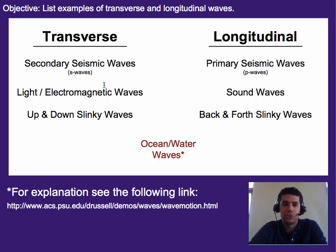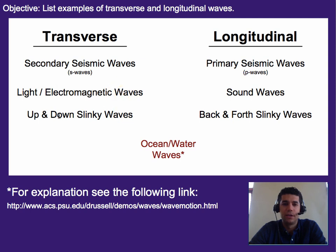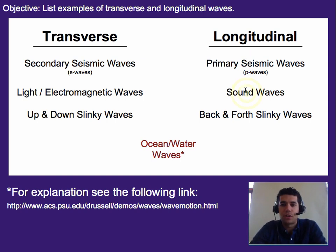Some examples of transverse and longitudinal waves: there are actually two types of seismic or earthquake waves — the primary version is longitudinal and the secondary ones are transverse. Other examples of transverse waves are light or electromagnetic waves, and up-and-down slinky waves where you're physically moving your hand up and down. For longitudinal waves, the most common example is sound waves, but another example would be back-and-forth slinky waves, where you're pulsing your hand back and forth.